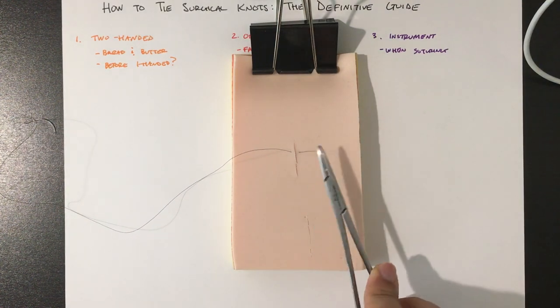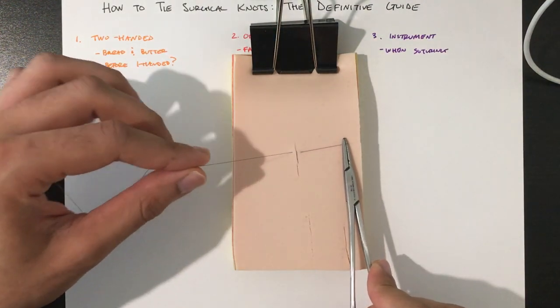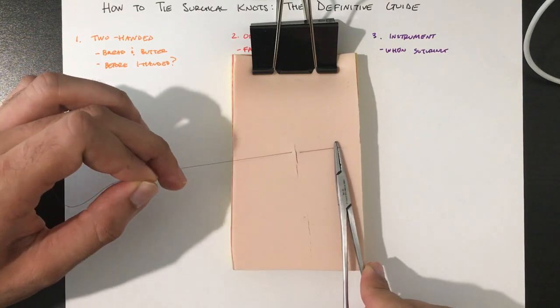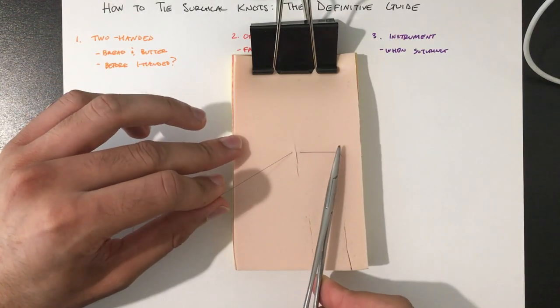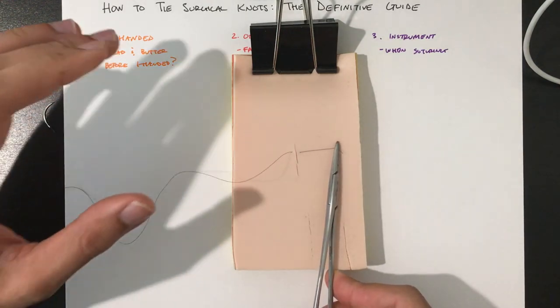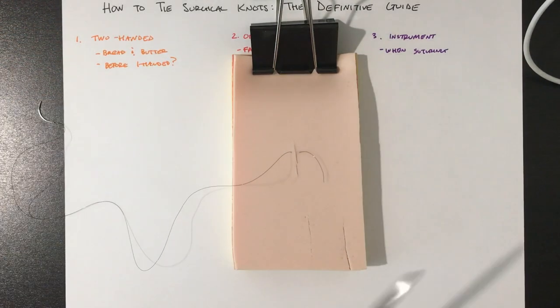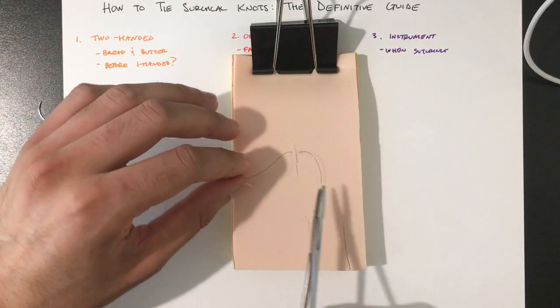So next is the instrument tie. Here I have laid down my suture. A common mistake people make is they'll keep the short end too long. You actually only want this about one, one and a half inches. If it's too long, it actually makes it more difficult.